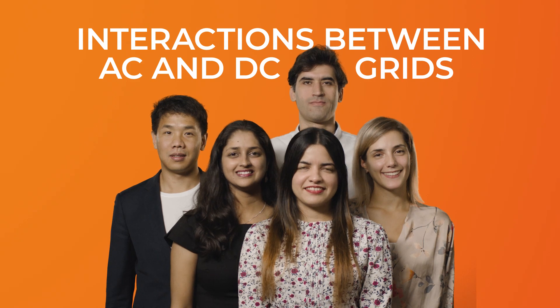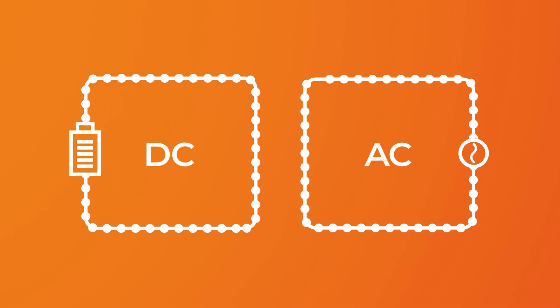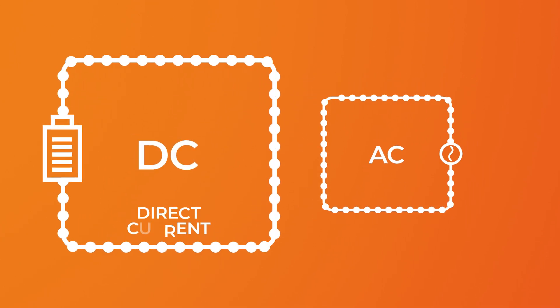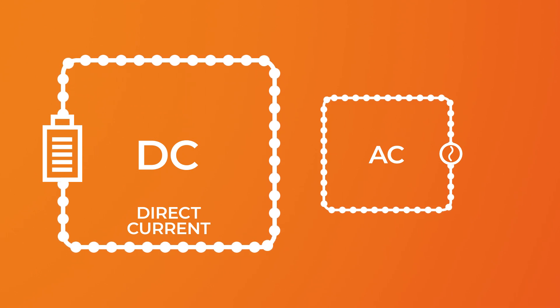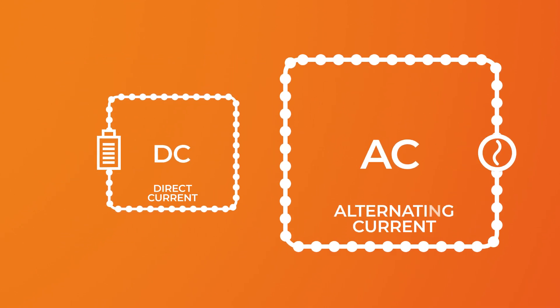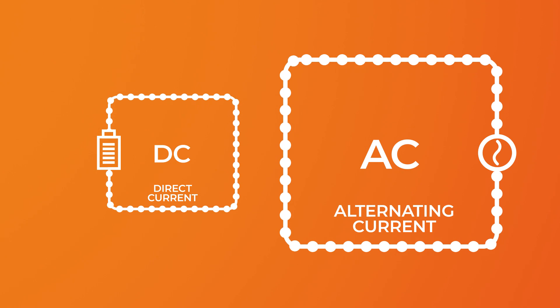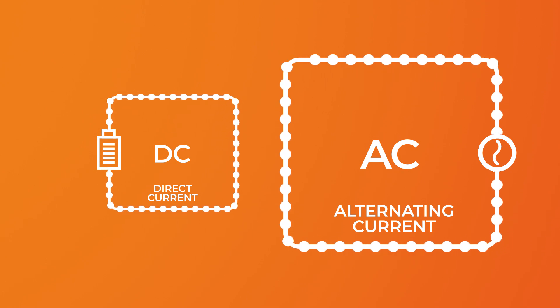Interactions between AC and DC grids. We have two circuits: DC and AC. DC stands for direct current, in which the electrons move in a single direction. AC stands for alternating current, in which the electrons move in both directions.